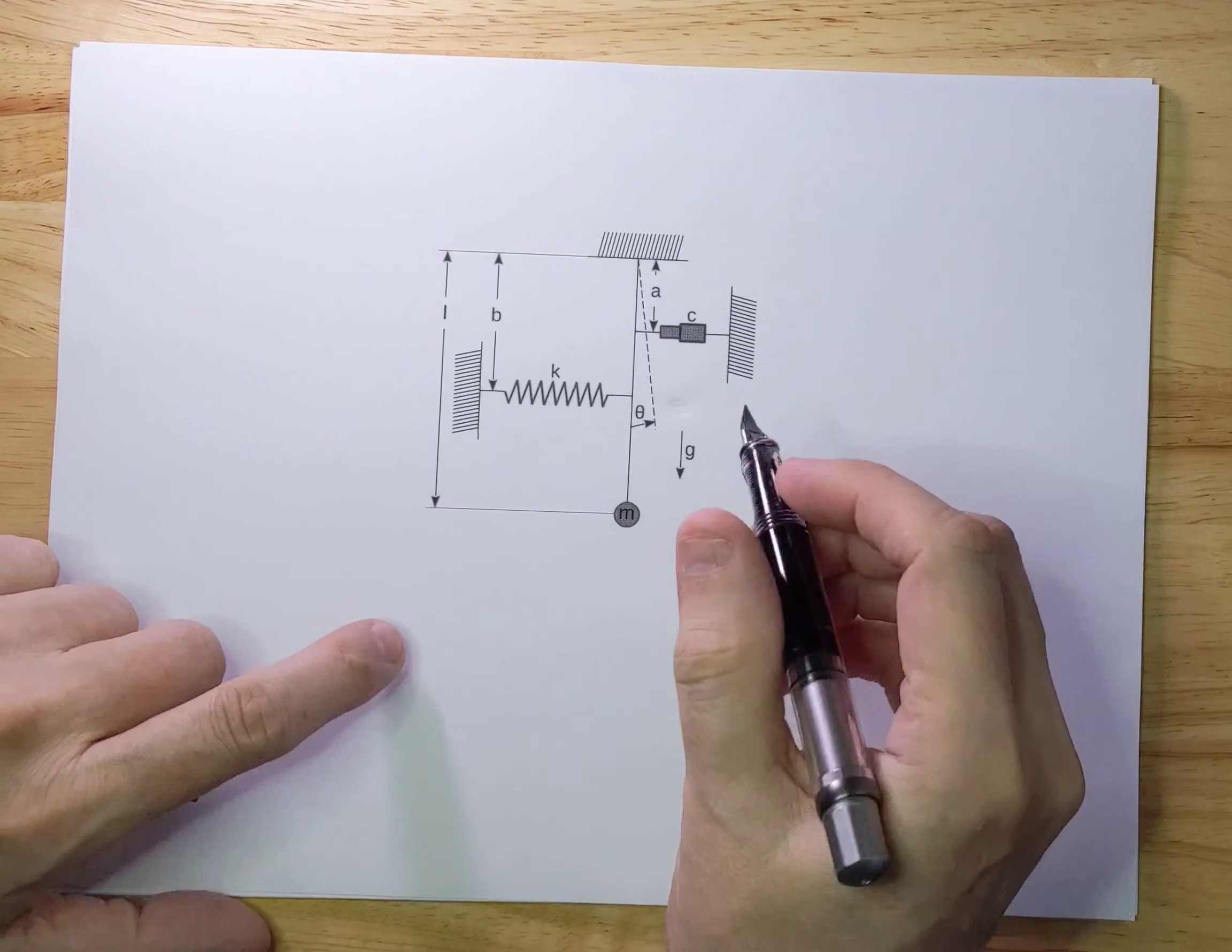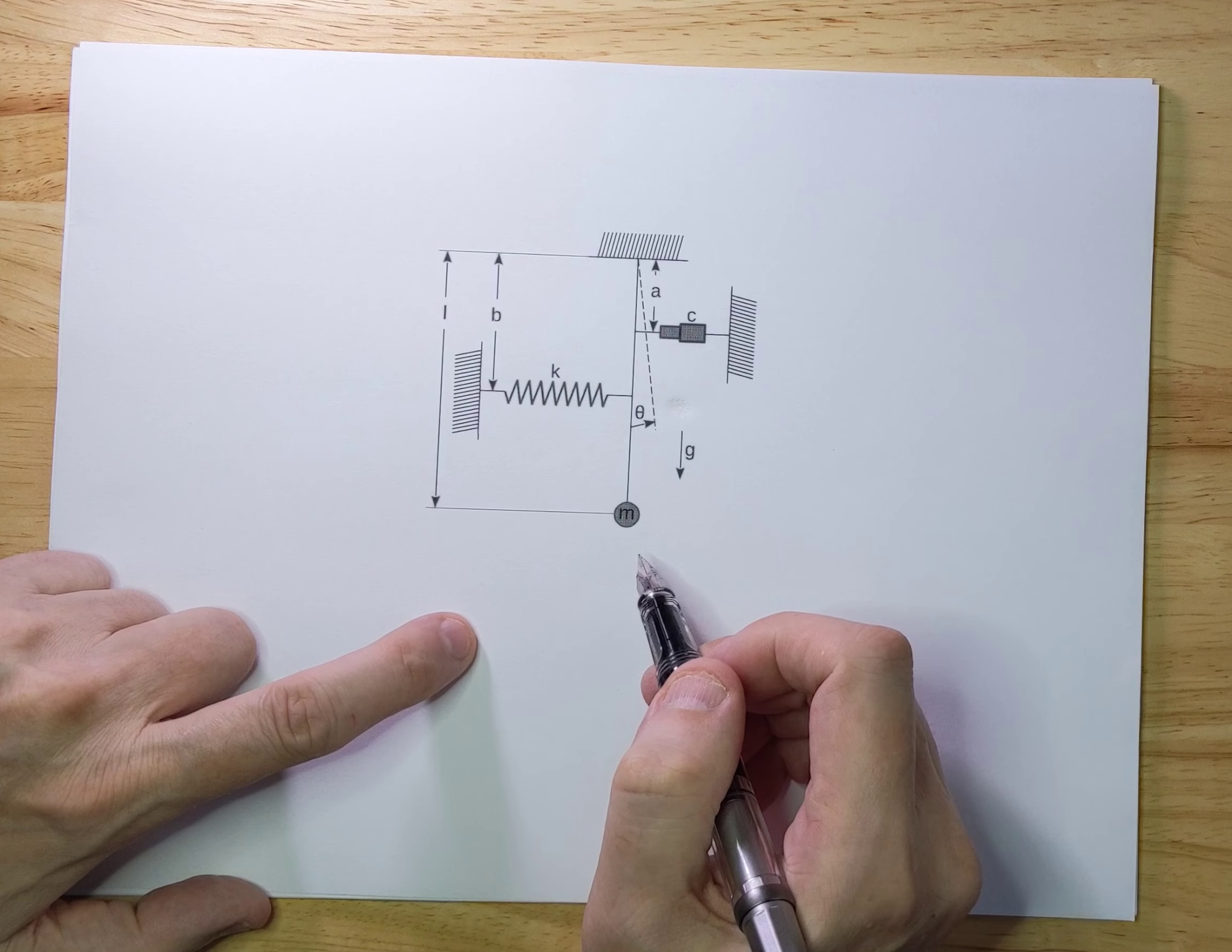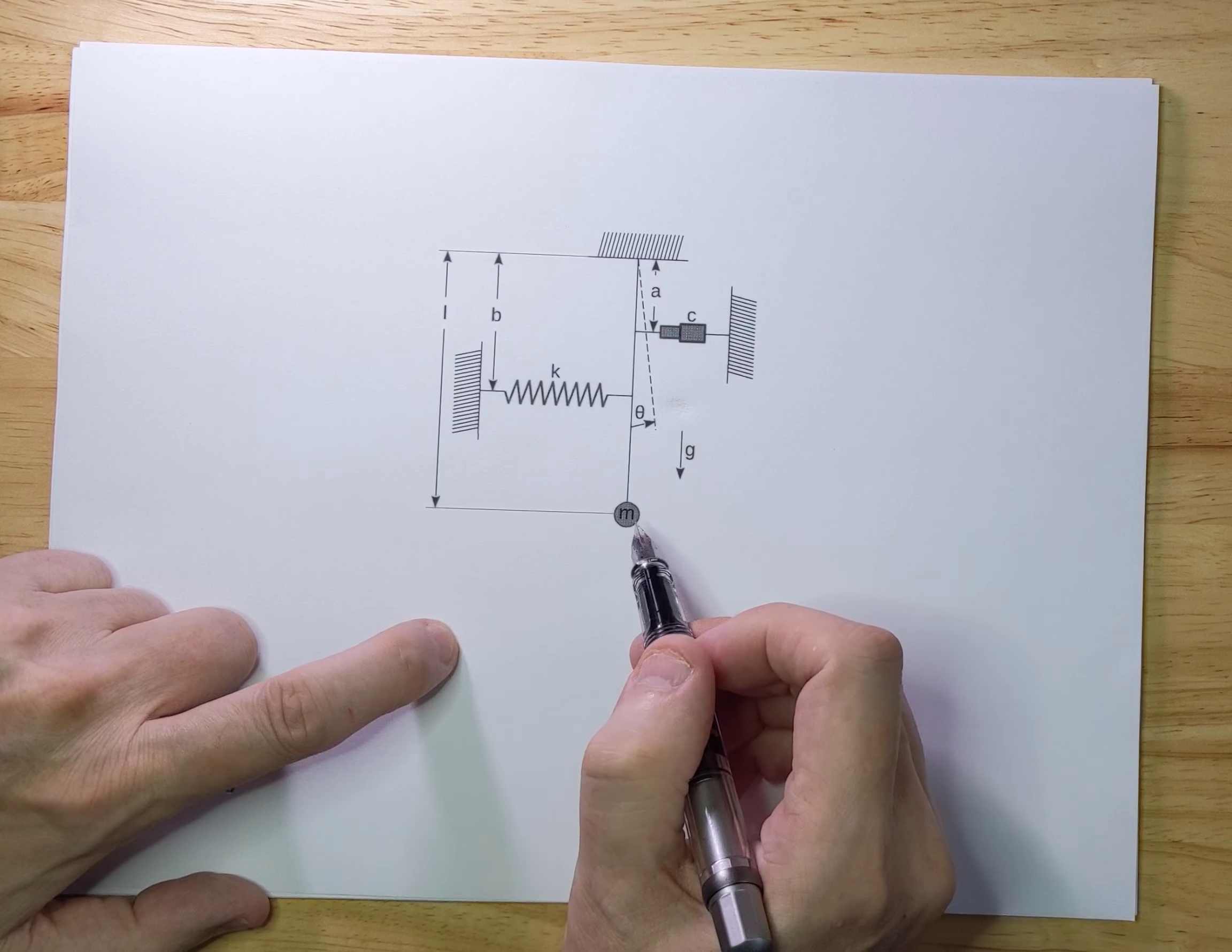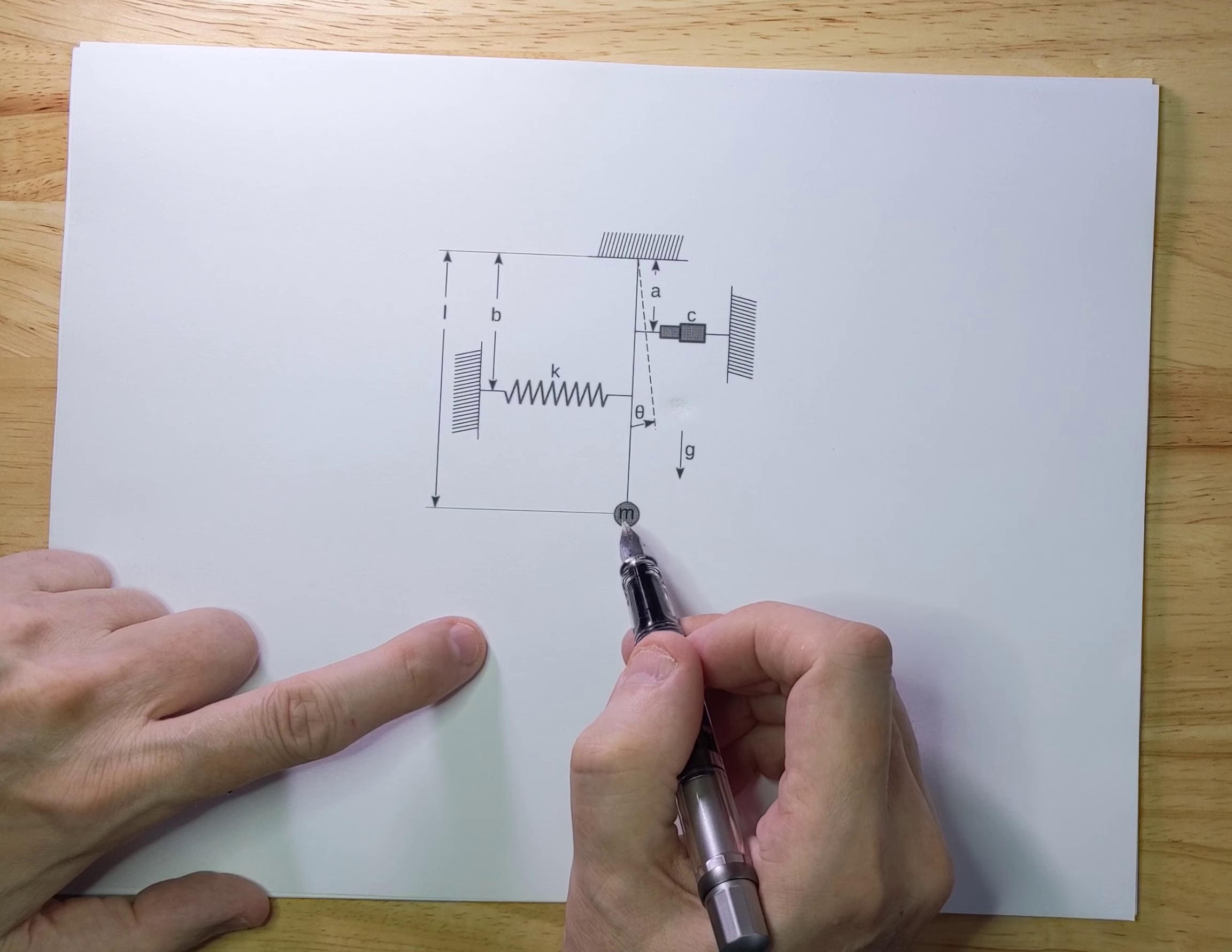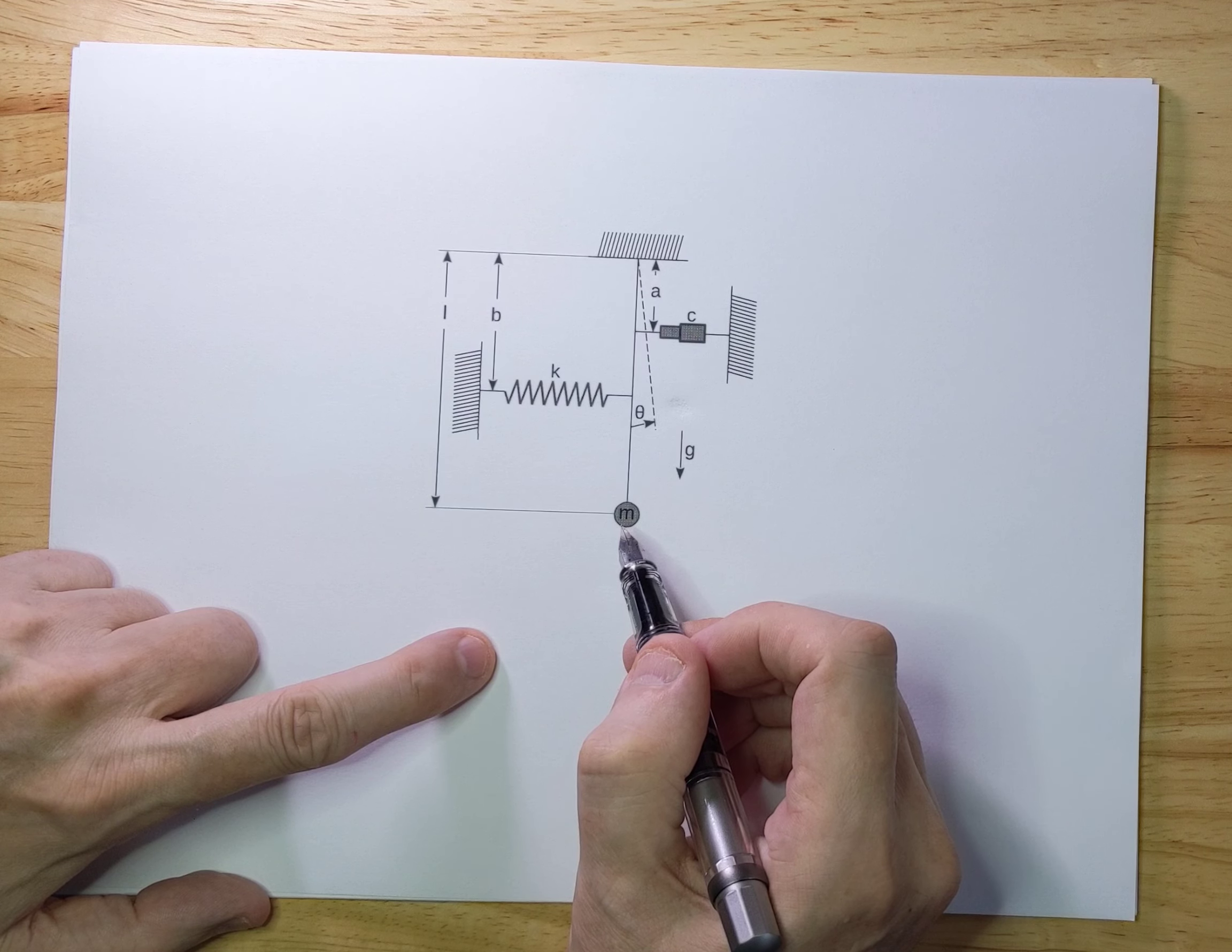Today I'm going to talk about a pendulum and I'm going to use the technique of Lagrangians to solve the movement of the pendulum. So we're going to come up with a second order linear differential equation and we're going to solve that equation and see what the behavior of this pendulum is.